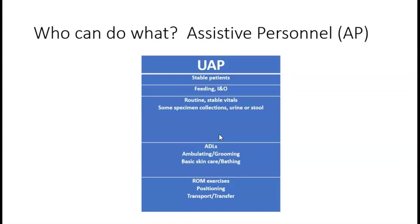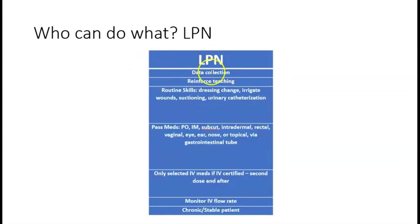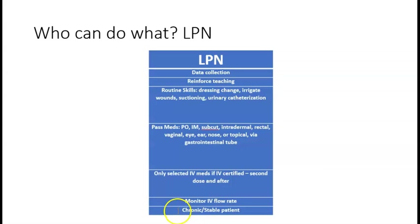The aide is not allowed to teach, but can reinforce teaching the RN has already provided. The LPN can collect data but cannot assess — for example, they can listen to lungs and document wheezing, but the RN must assess the data and determine next steps. The LPN can reinforce teaching, perform routine skills, pass medications, administer IV meds if IV-certified after the RN gives the first dose, monitor IV flow rate, and is assigned chronic or stable patients.